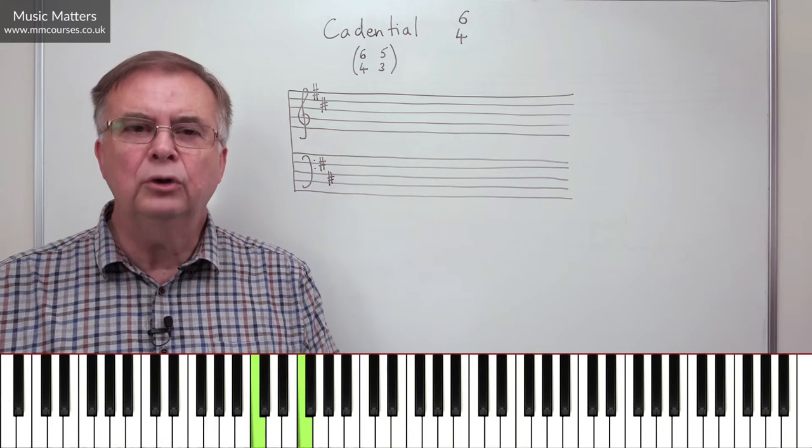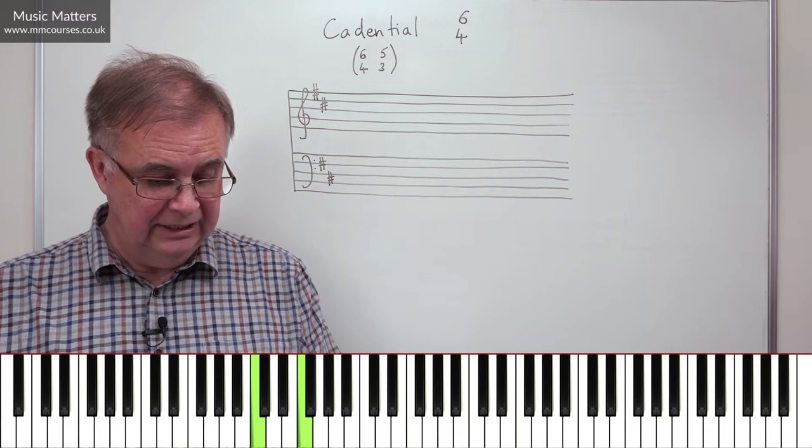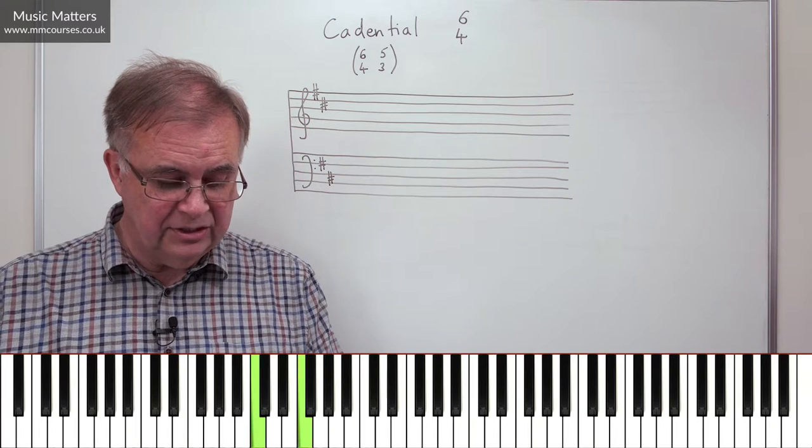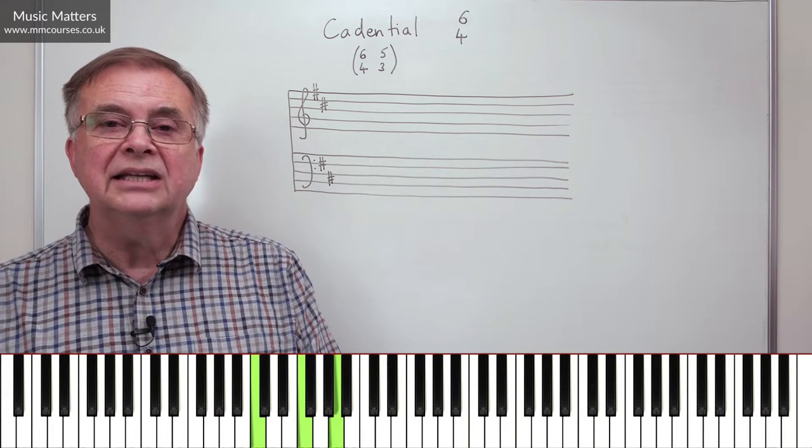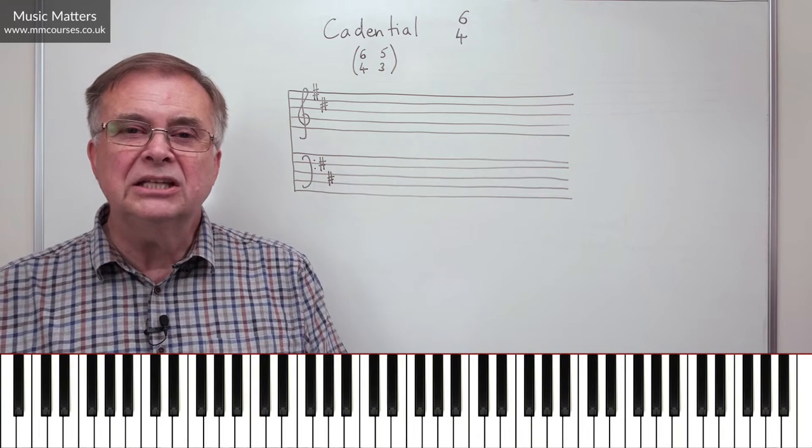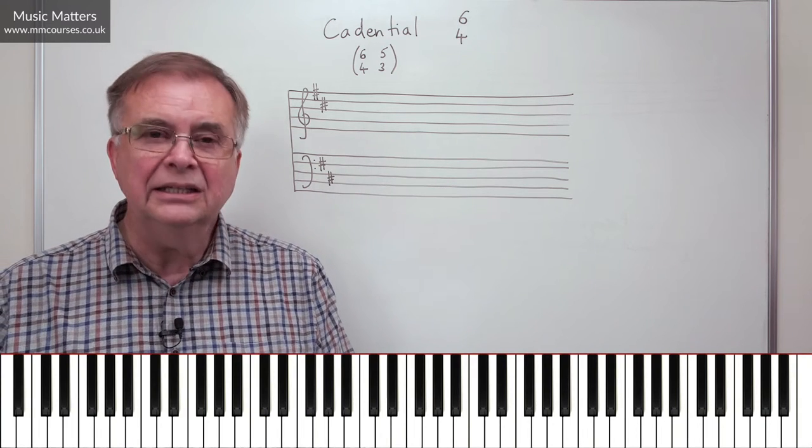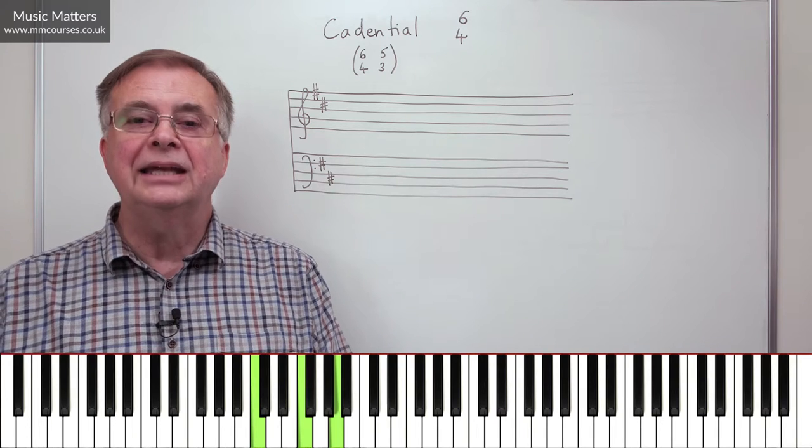So one, two, three, four, number four is F. What's number six? Well if number four is F, G's number five, so six is A, isn't it? So a 6-4 above C would be C, F, and A.